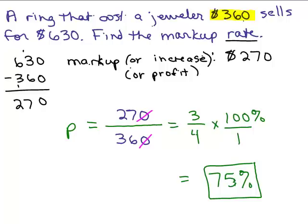Now a way to quickly check your answer here is go back and take 75 percent of 360, and see if that really is the 270. So we could check, if that's the markup rate, they bought it for 360, what is 75 percent of 360?